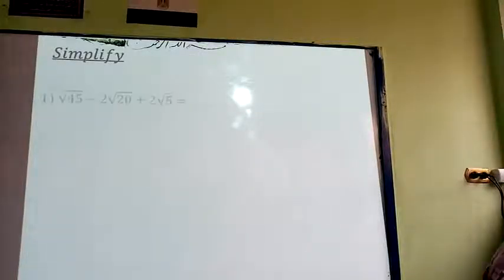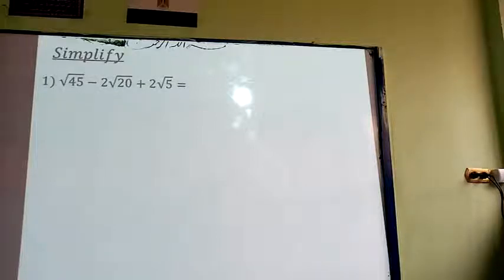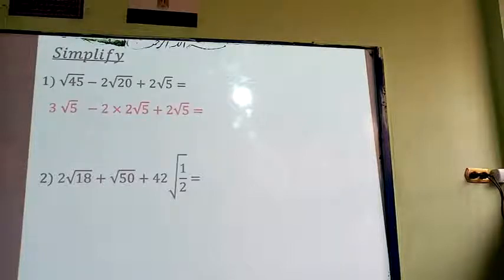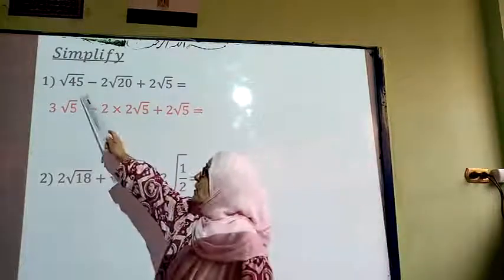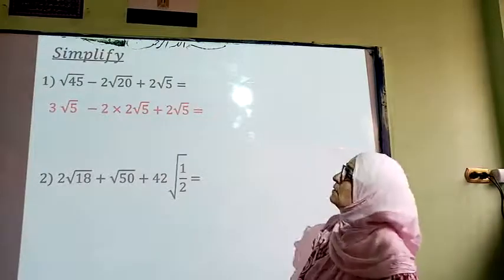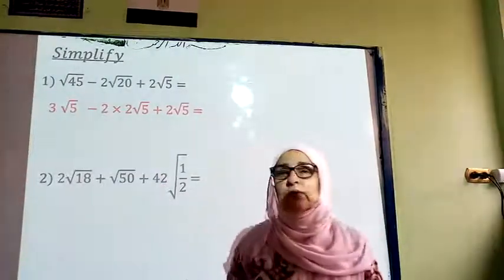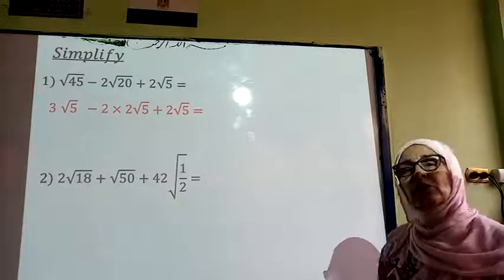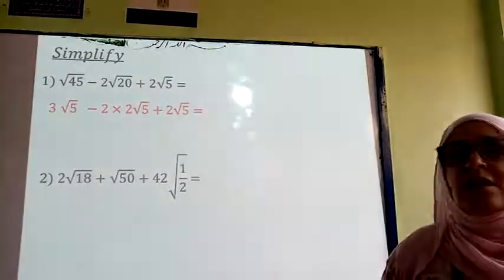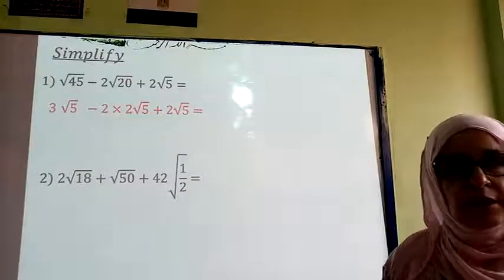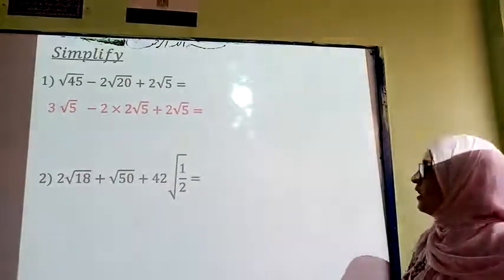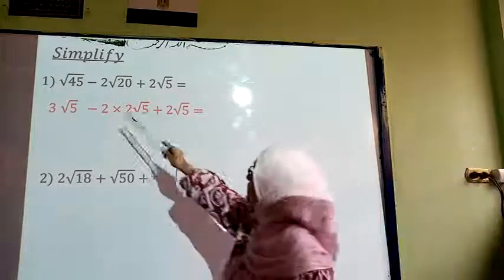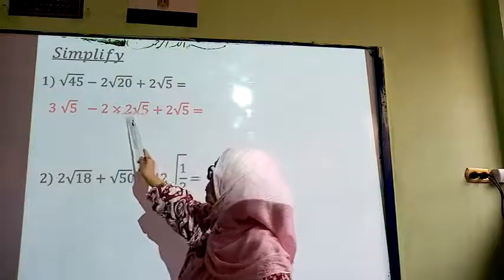Another exercise — simplifying: I have root 45 minus 2·root 20 plus 2·root 5. I am going to factorize 45 as we did in the previous exercise and I end up with 3·root 5. We are teaching you how to factorize because in the cubic root it might be difficult to find the result using a calculator. Root 20 after factorization is going to be 2·root 5.